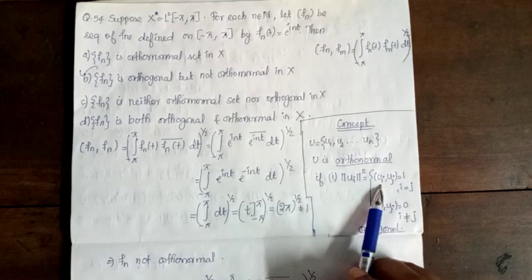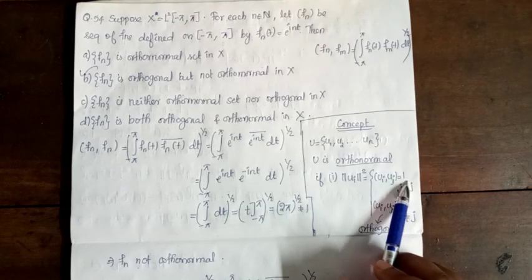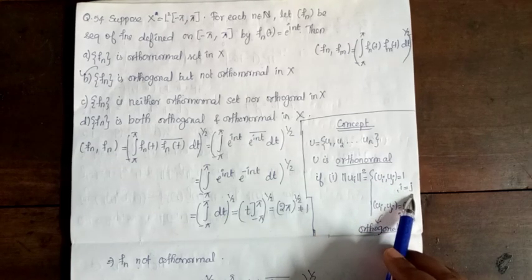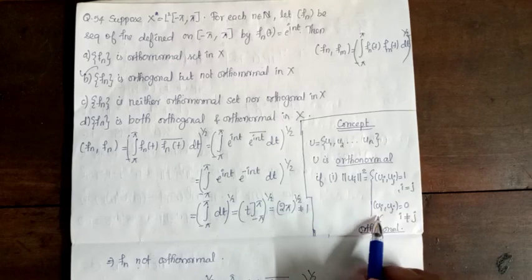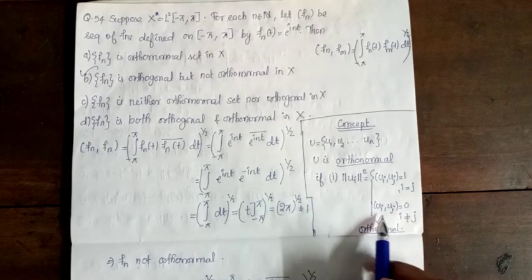For an orthonormal set U = {u1, u2, ...}, we need ⟨ui, uj⟩ = 1 for i = j and ⟨ui, uj⟩ = 0 for i ≠ j.